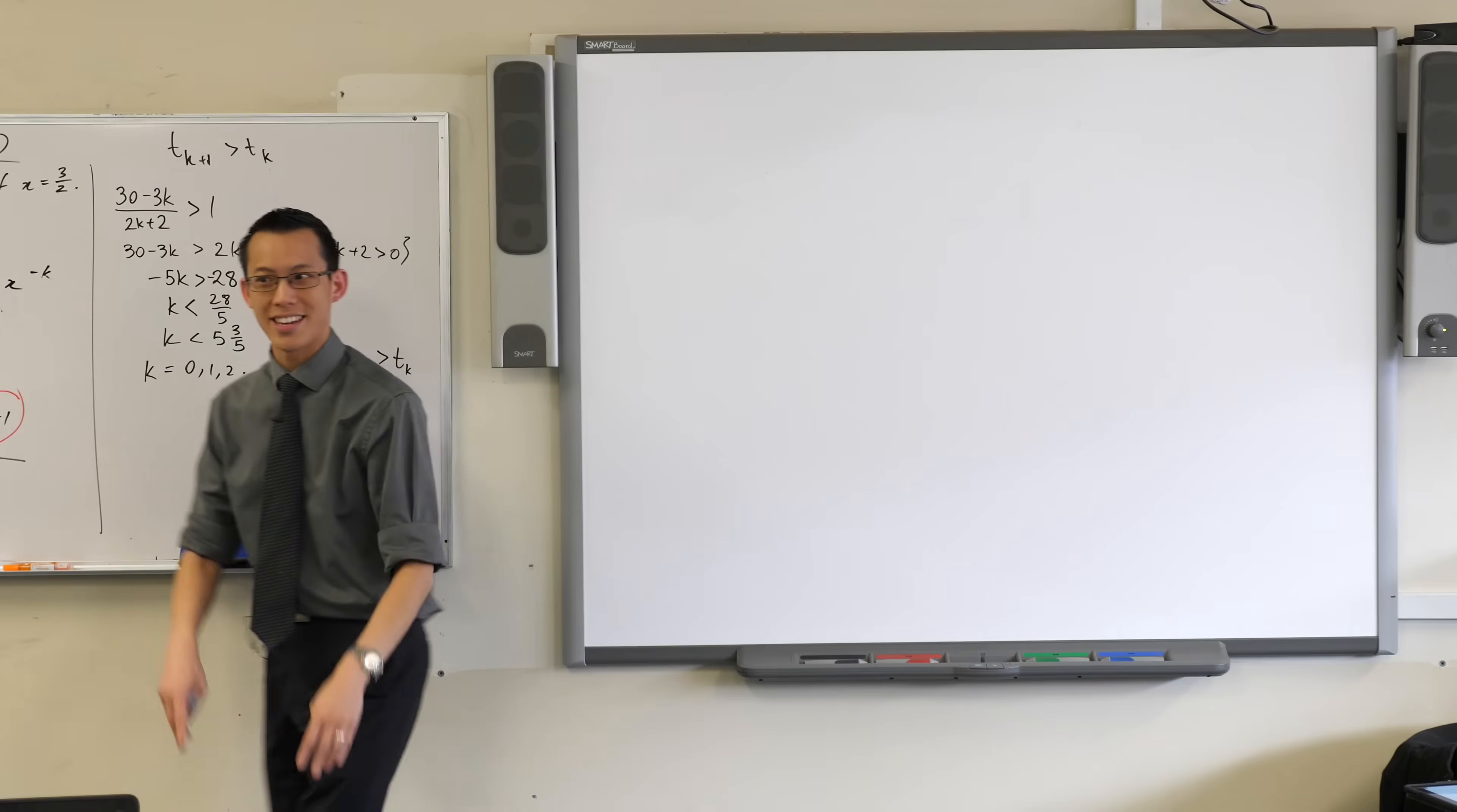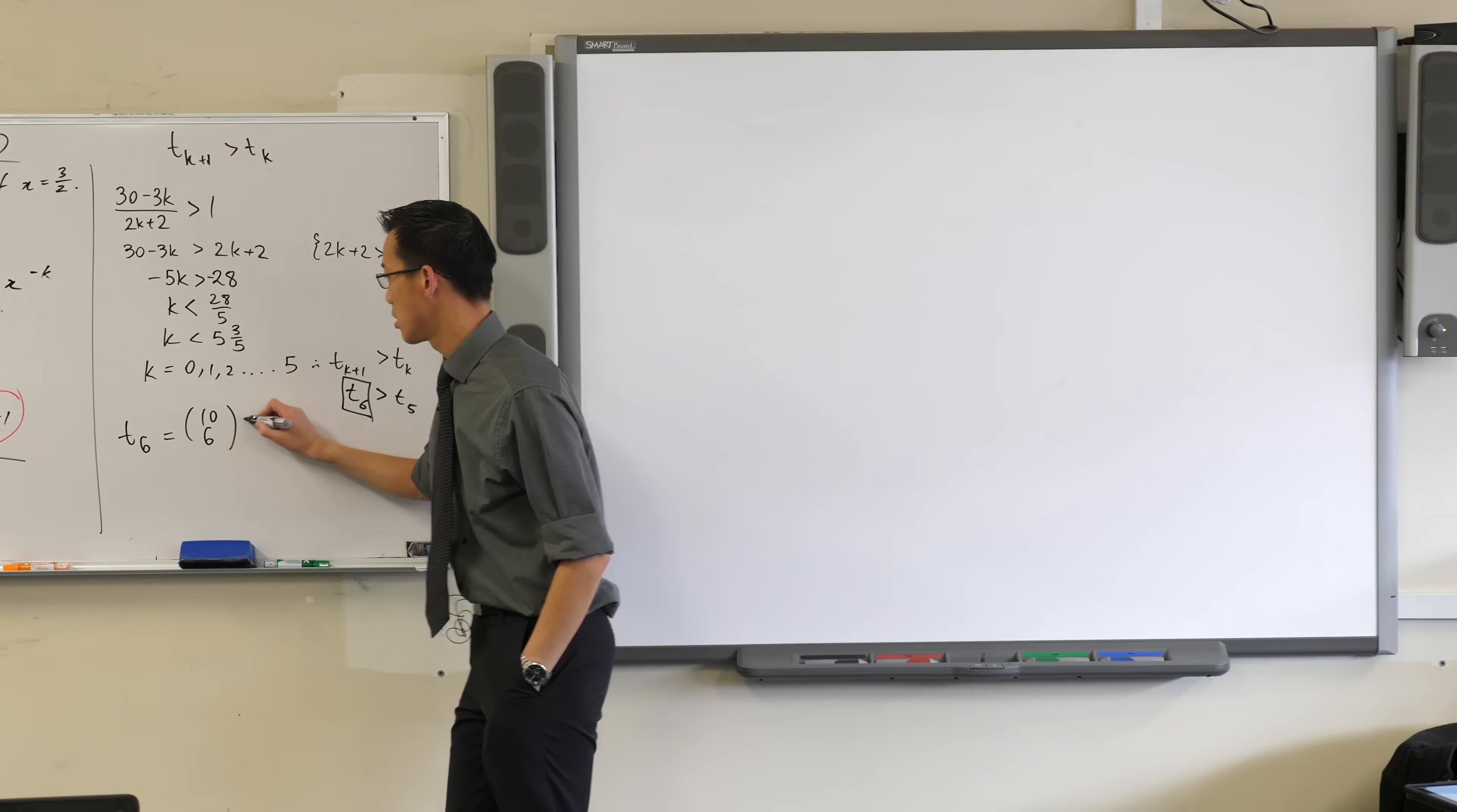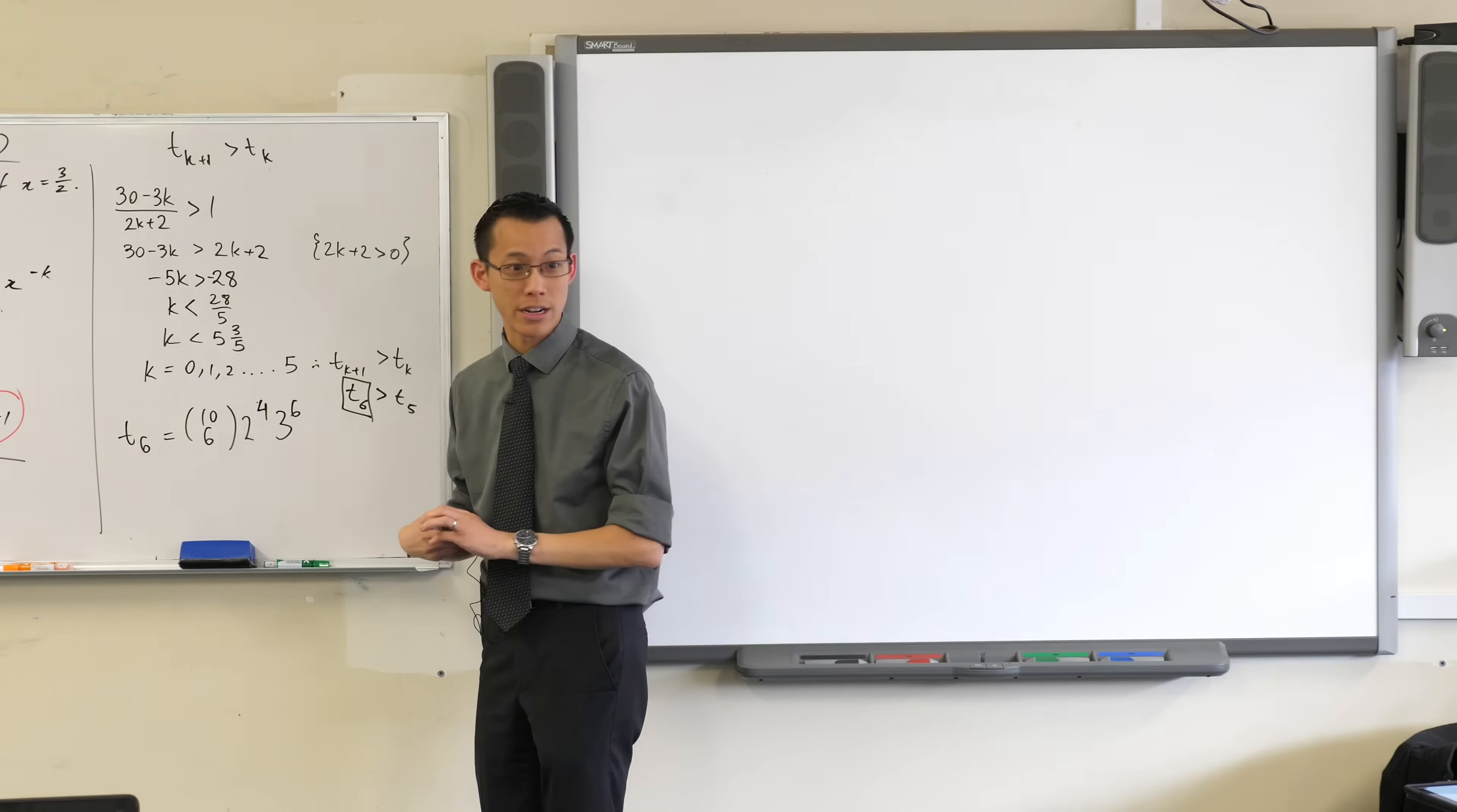So now that you've identified that it's coefficient number 6, you go back to your original general coefficient and you pop in 6. Coefficient 6 will be 10c6, 2 to the power of 10 minus 6, which is 4, and 3 to the power of 6. There you go. There's your greatest coefficient.